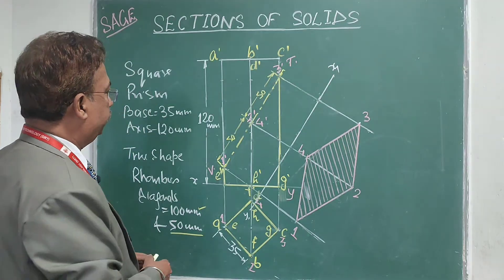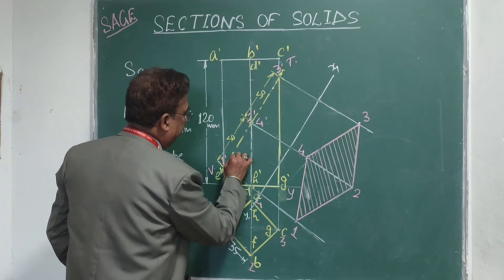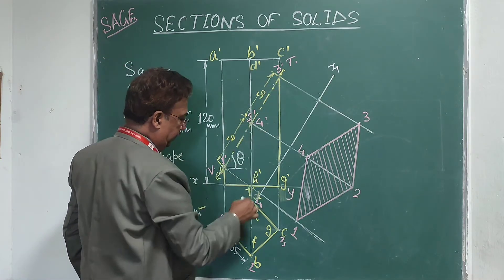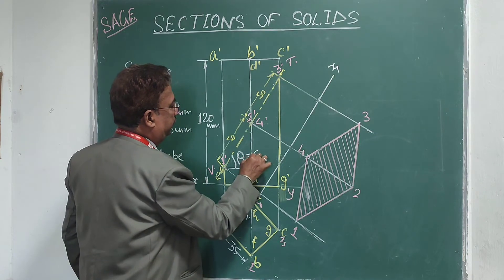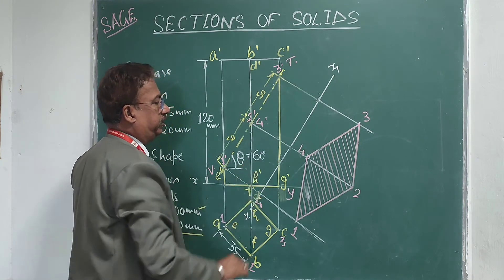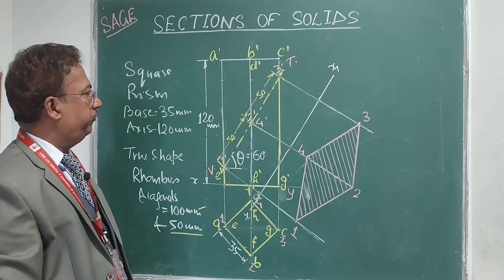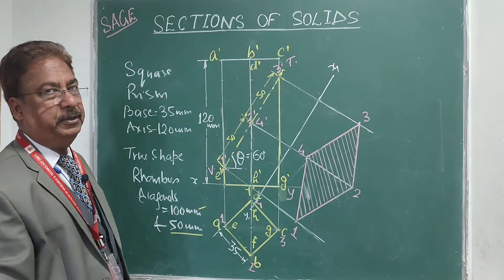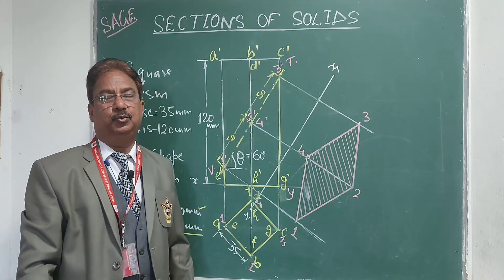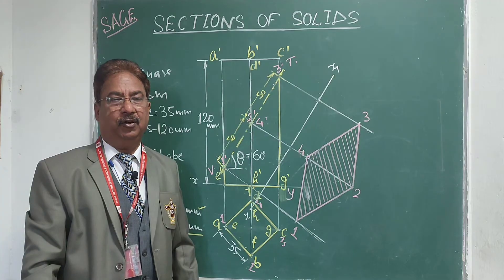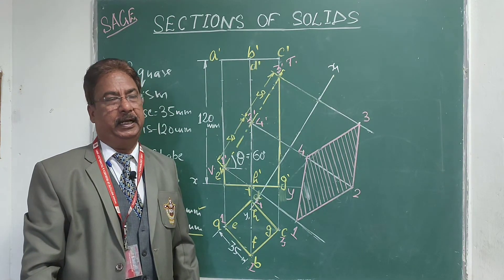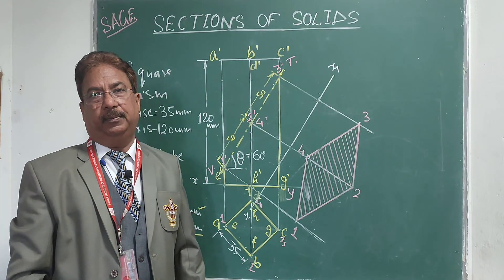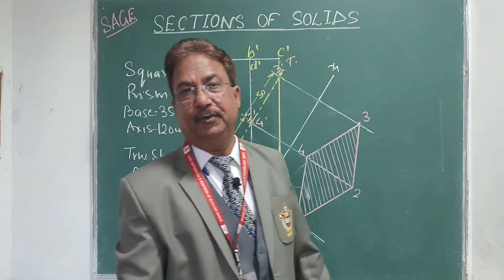This is the solution to the problem. The inclination of the AIP, theta, can be found: since this length is 100mm and this length is 50mm, theta equals 60 degrees. This is a problem where we cut a square prism so that the true shape of the section is a rhombus of diagonals 100mm and 50mm. I hope you understand the concept and are now able to solve similar problems. Thank you very much.